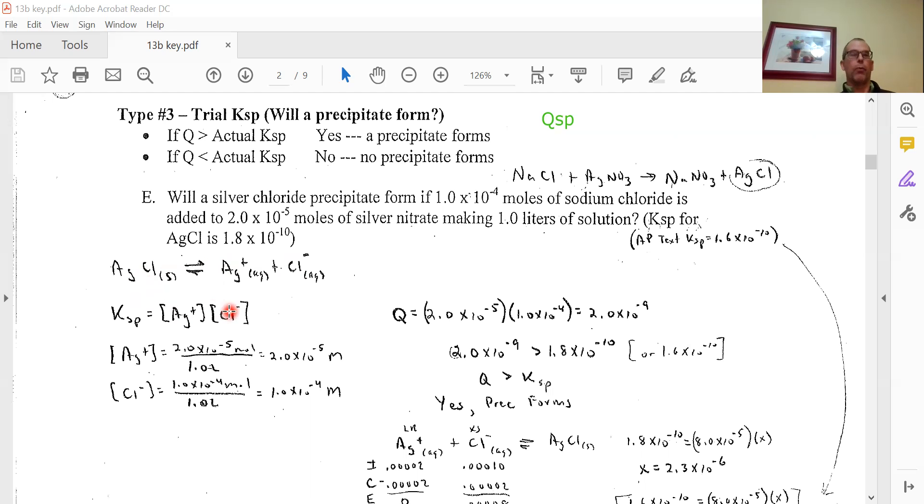Instead of saying this solid breaks up into equal amounts X and X, we're getting our amounts from a different source. We have 1×10^-4 moles of sodium chloride. We don't care about the sodium, but we care about the chloride. Since sodium chloride and chloride are in a 1:1 ratio, we have 1×10^-4 moles of chloride. The total solution is 1 liter, so 1×10^-4 over 1 liter gives us the concentration of Cl-.